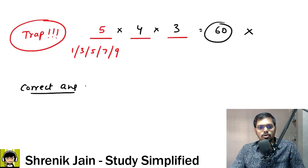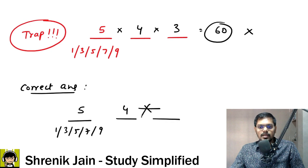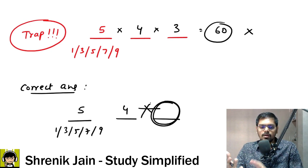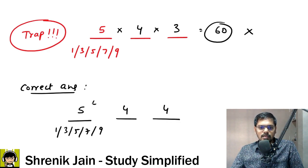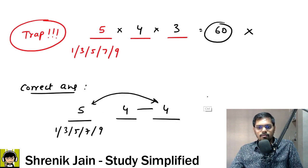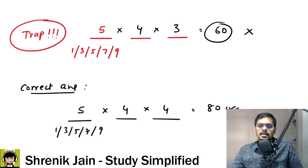The correct approach: first position has 5 choices (1, 3, 5, 7, 9). Second position — adjacent cannot be same, so 4 choices. Third position — adjacent to the second cannot be same, so again 4 choices (the first digit can repeat here). Therefore the answer is 5×4×4 = 80. So yes, 80 is absolutely correct. Easy but tricky question.